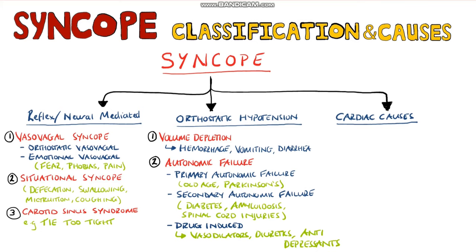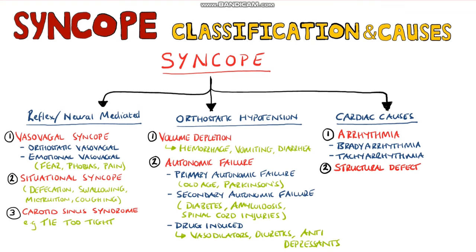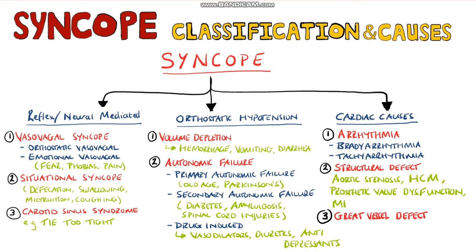Now we have the ones we really need to identify: the cardiac causes of syncope. The one most talked about is arrhythmia, which can be either a brady or tachyarrhythmia. We can also have structural problems such as aortic stenosis, hypertrophic cardiomyopathy, prosthetic valve dysfunction, and even myocardial infarction. Lastly, problems with the great vessels, including pulmonary emboli and acute aortic dissection.